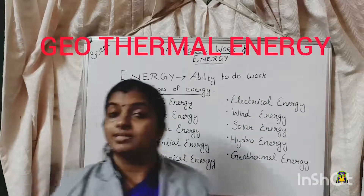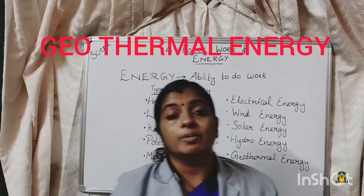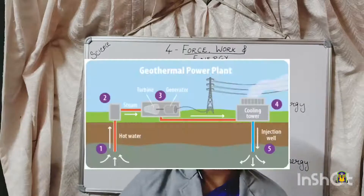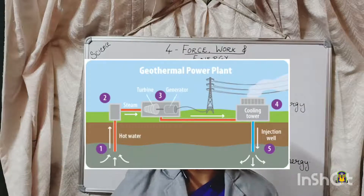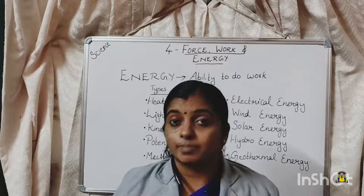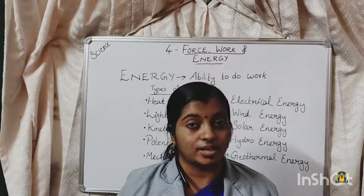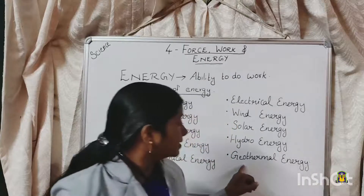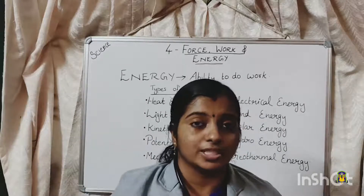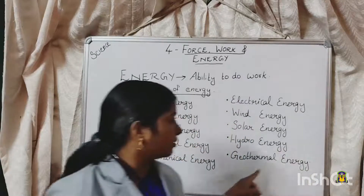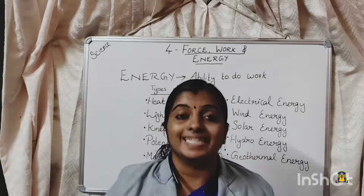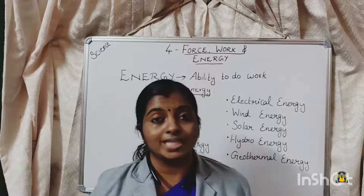Now, geothermal energy. The inner part of the earth is very hot and there is hot underground water present inside. This heat energy of the water can be used for several purposes, like producing electricity. The heat that is inside the earth is called geothermal energy. Geo means earth — we have studied in social science that the word geo means earth. Geothermal energy is the heat energy that we get from deep inside the earth, and it can be used for producing electricity.